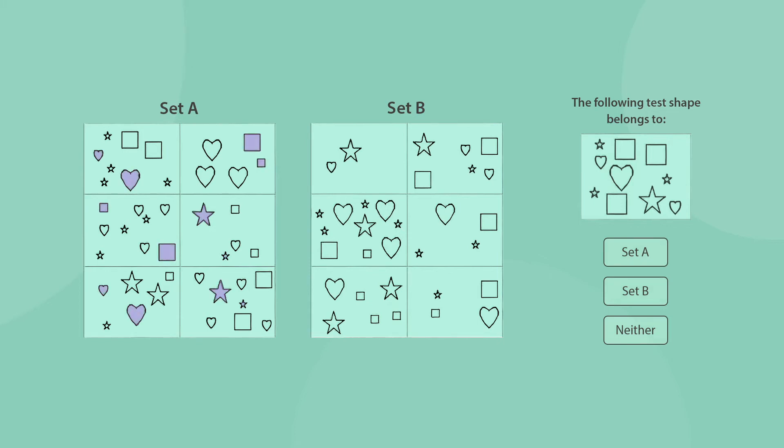In our case, on set A, there is exactly one pair of identical shapes that differ only in size. One of them is large, and the other is small. On set B, there is an equal number of large and small shapes. The test shape belongs to set B, since there is an equal number of large and small shapes. The test shape does not belong to set A, since there are two pairs that match the rule in A, and not exactly one.